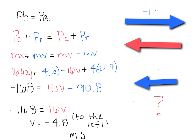This means that we know the canoe is moving to the left because the answer is negative.